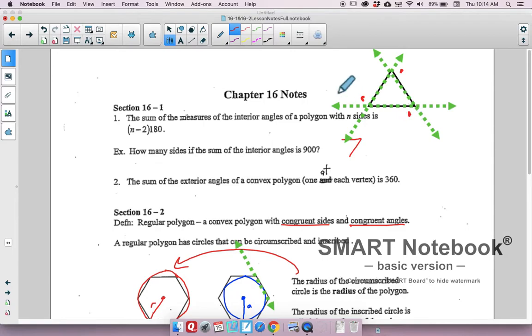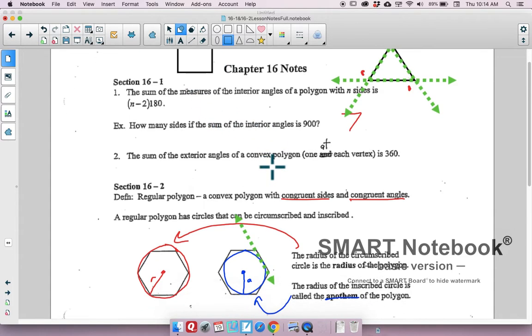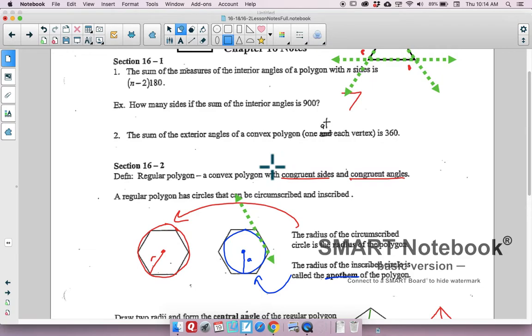Think about if you had a square or a rectangle. Let's just put one of those up here. These are all 90-degree angles. What would the exterior angle be here? 90. Here, 90. 90, 90, this add up to 360. So there you have it.